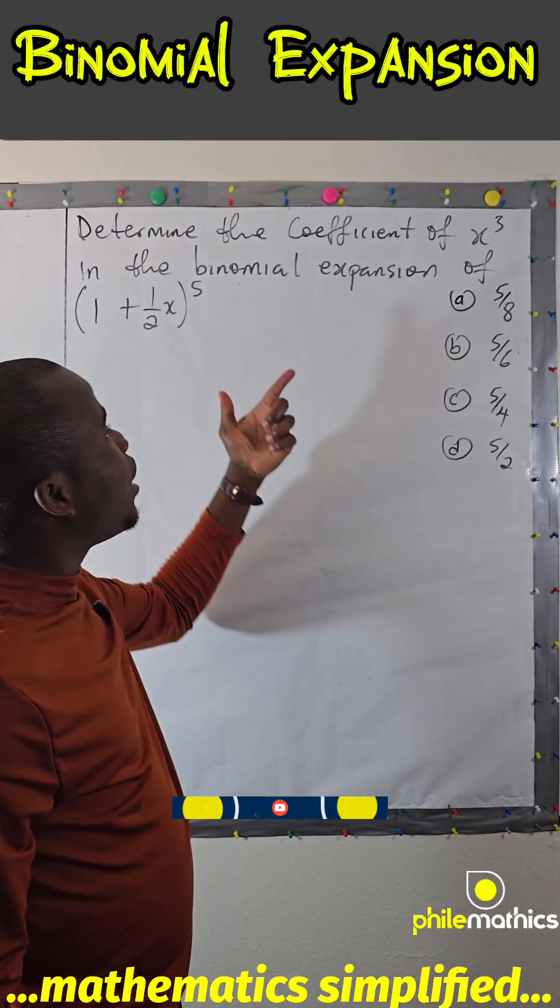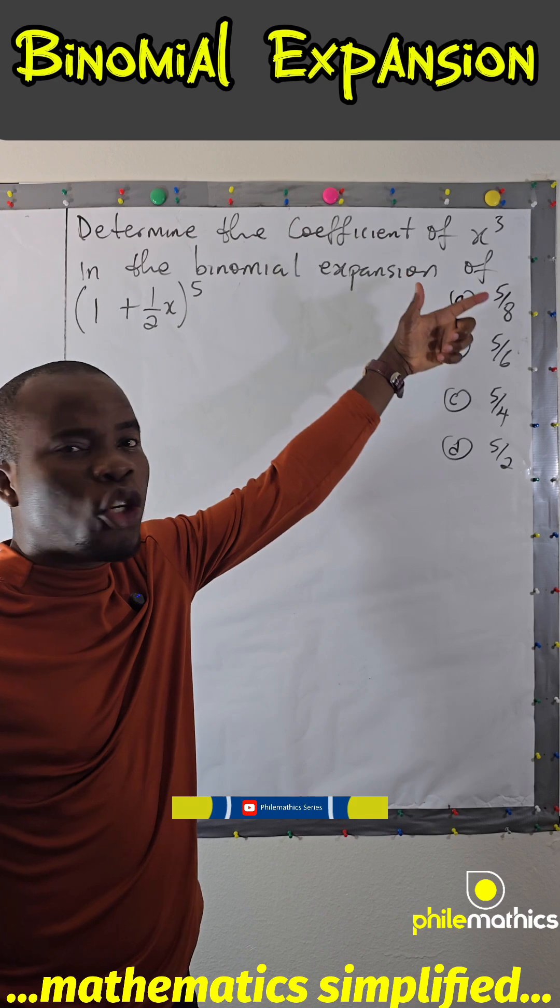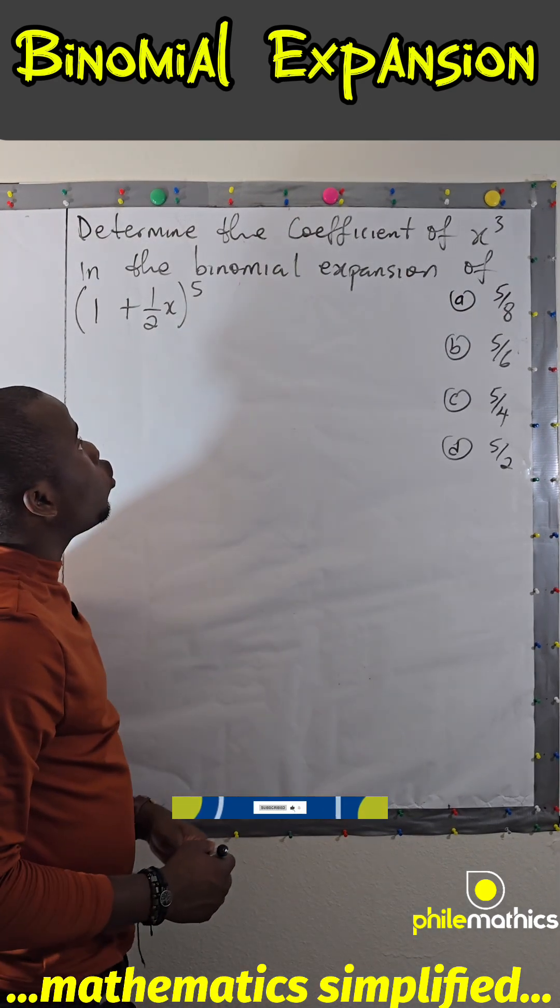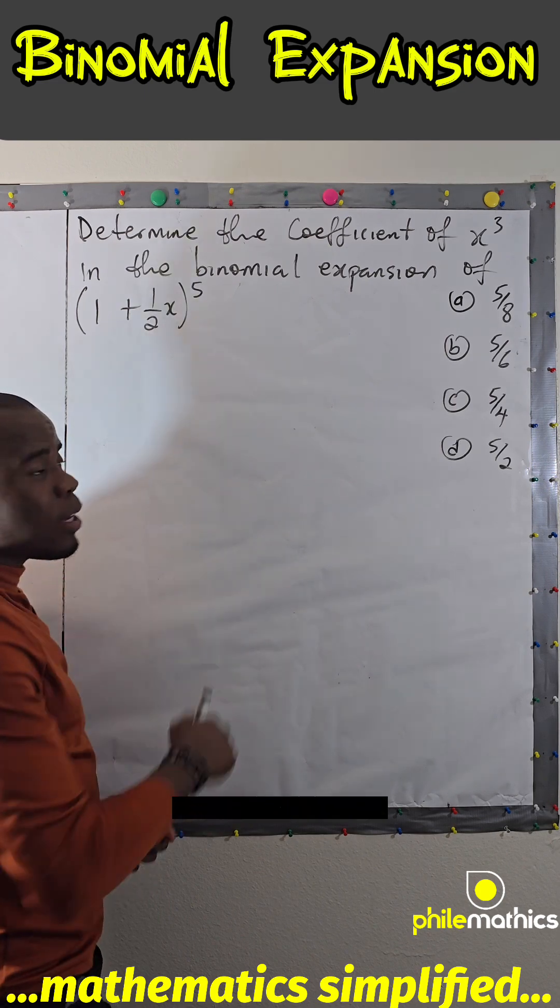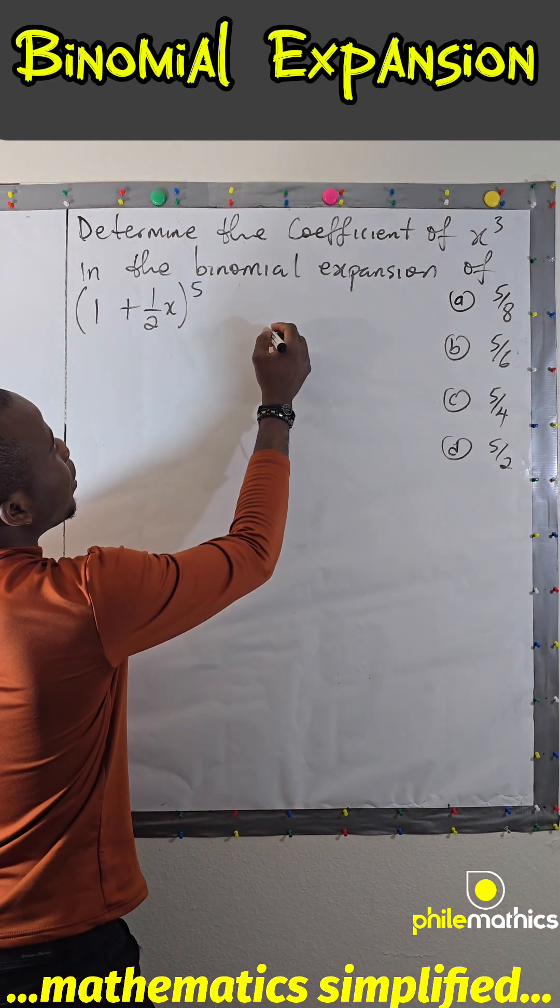This is a problem on binomial expansion and we are asked to look for the coefficient of x cubed in this expansion. So for you to write this expansion you should know what Pascal's triangle is.